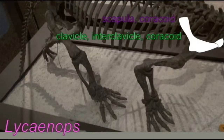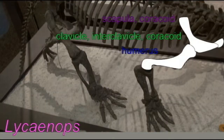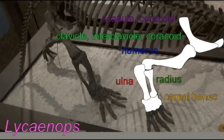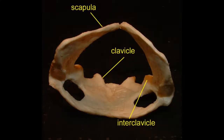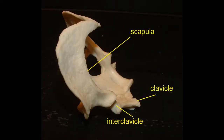In primitive modern mammals, the egg-laying monotremes, one can still observe a number of primitive features, such as the scapula lacks a spine and a supraspinous fossa, and the coracoids and interclavicle bones are retained.